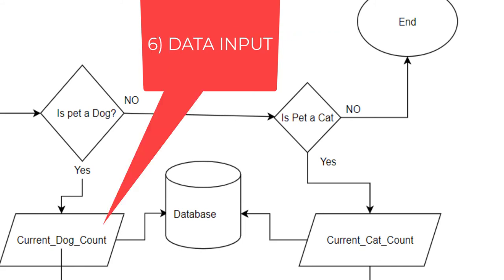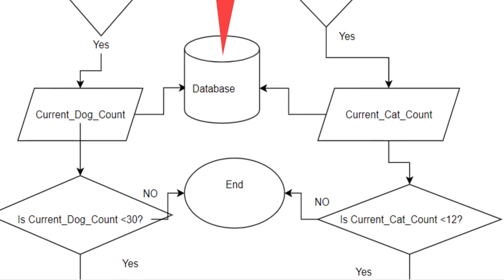Now we're going to data input. So we say, yes, it is a dog. So we're going to go and we're going to get the current dog count. We're going to say, yes, this is a cat. We're going to get the current cat count. We're going to add this information to the database. After getting current dog count, we can check to see if there's less than 30 dogs already at the facility. If there's more than 30, then we have to end the process because you have no more room for dogs.